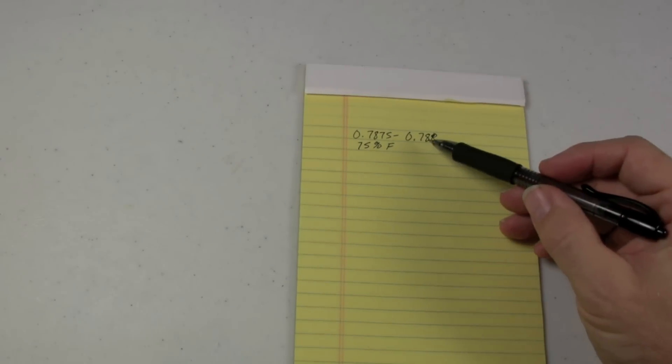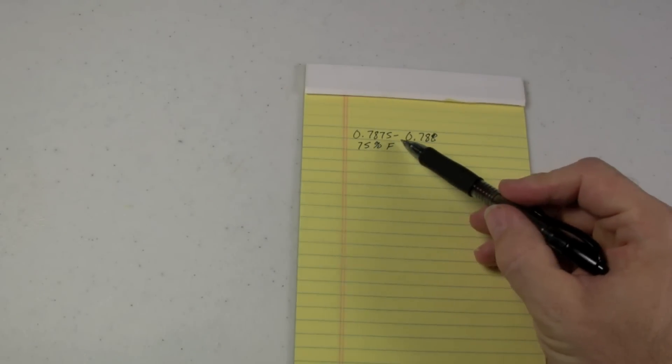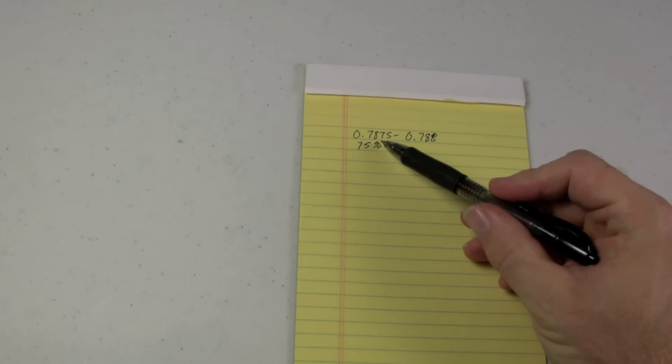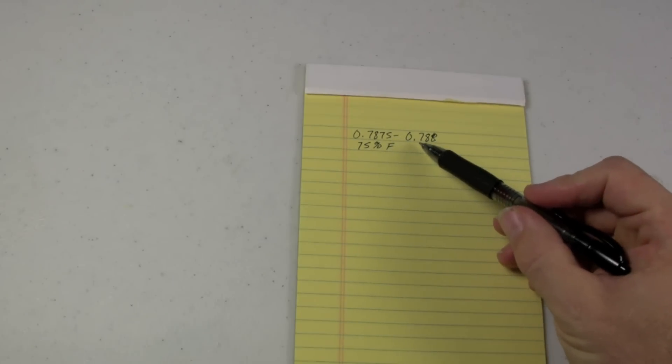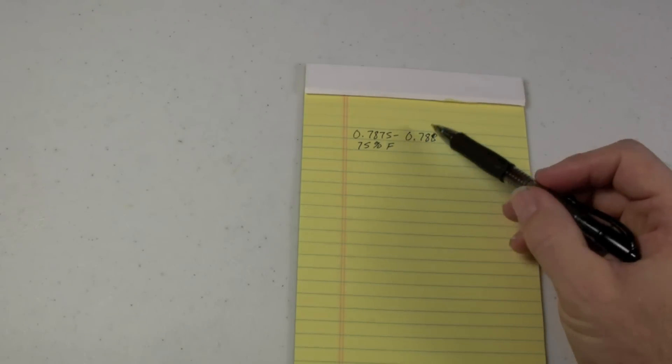Okay, when we took our reading, it was 75 degrees Fahrenheit, and the reading on the hydrometer was .7875 to .788. So it's somewhere in that range.